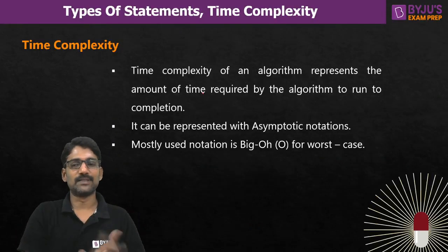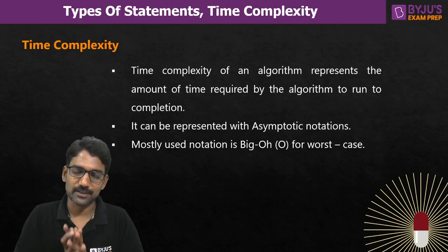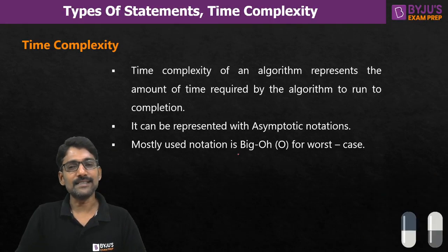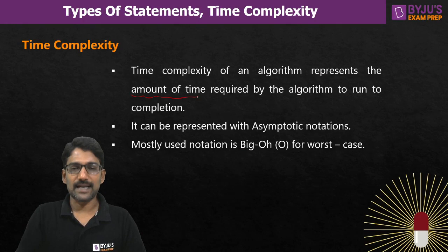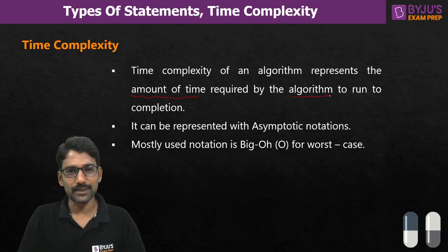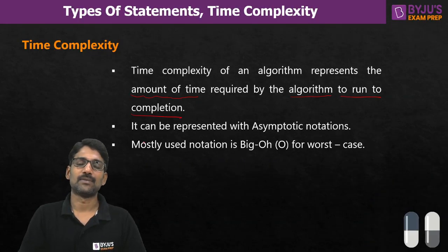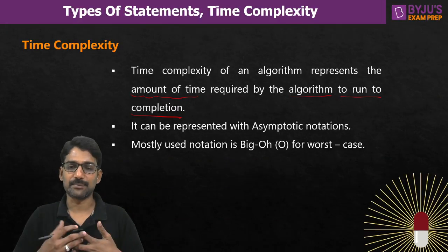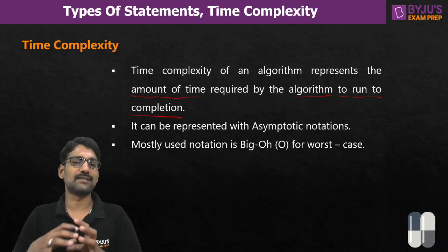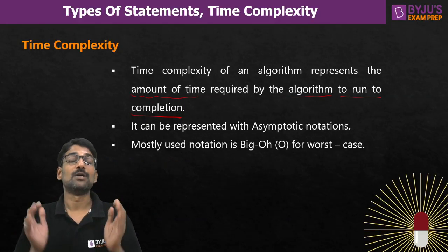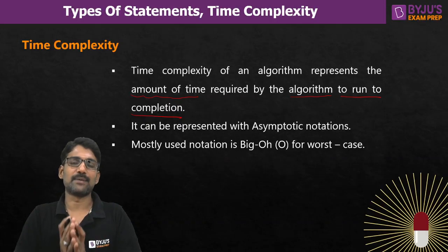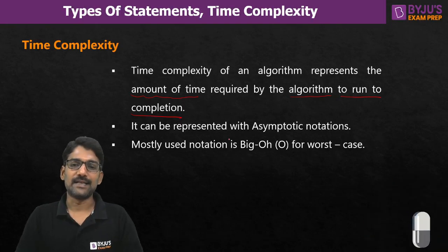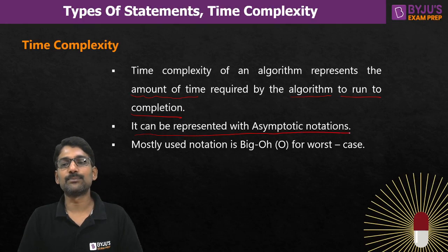Let us get into today's capsule. First of all, what is time complexity? It is the amount of time required by an algorithm to run and complete. When we have an algorithm with many statements of different types, the total time needed for all those statements to execute is what we call time complexity.